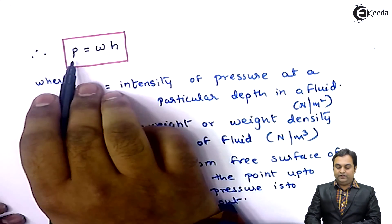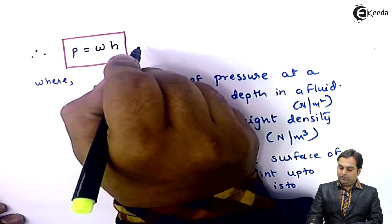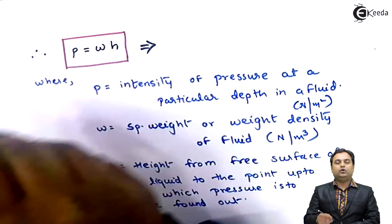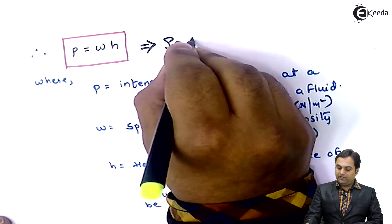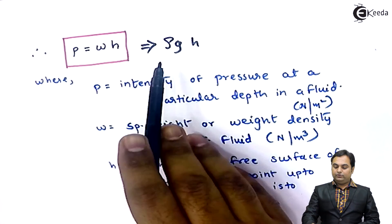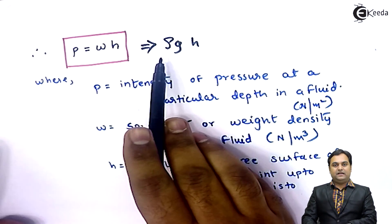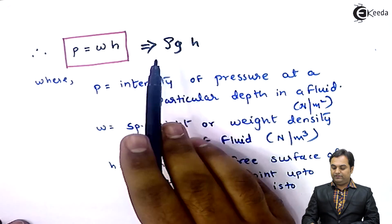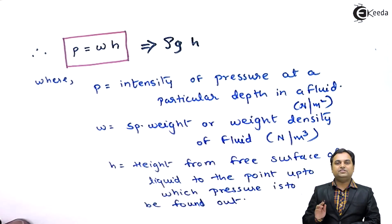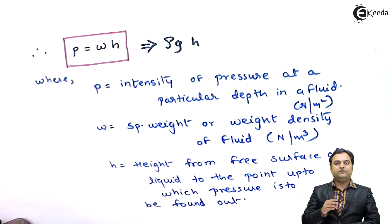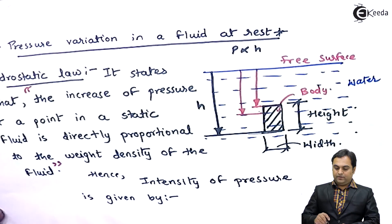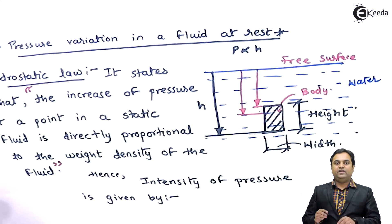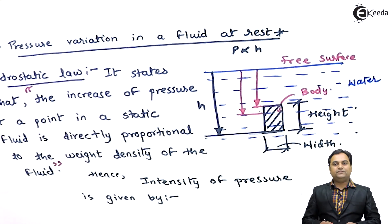Pressure is directly proportional to the height. The intensity of pressure can also be written as rho-g-h, since specific weight W equals rho into g. So even if we know the mass density rho and the acceleration due to gravity g, with H as the variable, we get different values of pressure. Here we have seen pressure variation in a fluid at rest using a diagram and hydrostatic law. I hope this concept is clear.